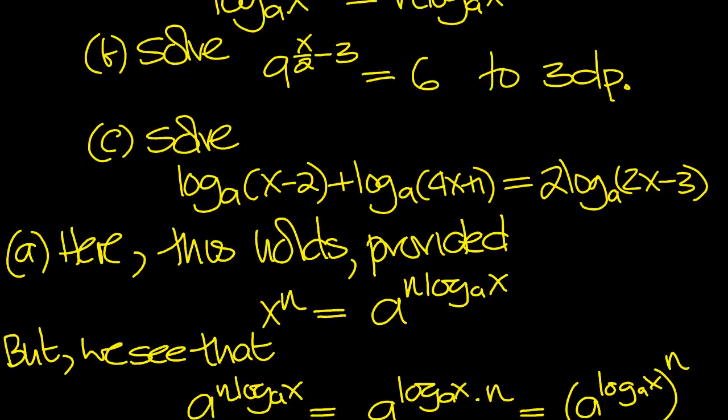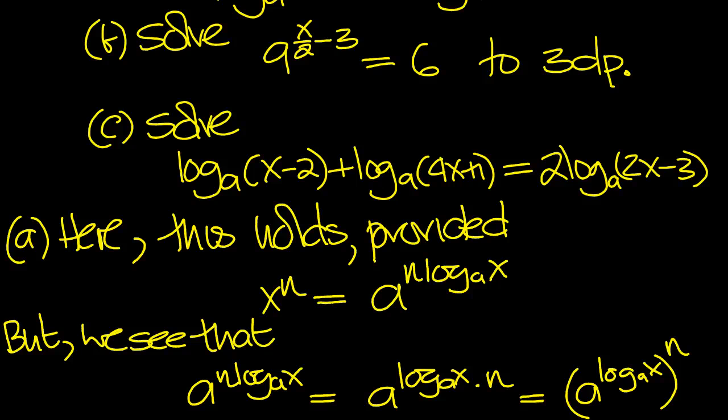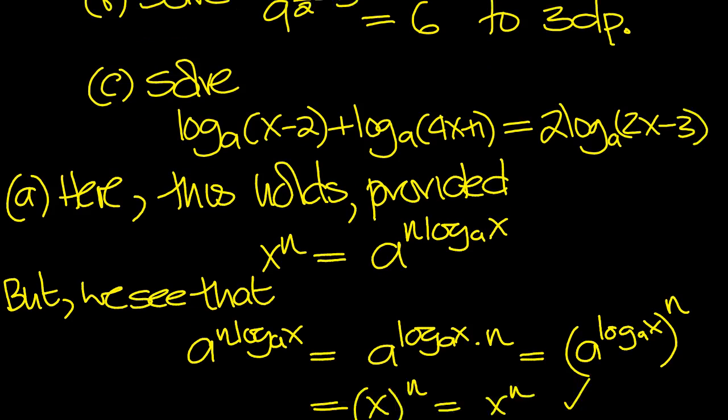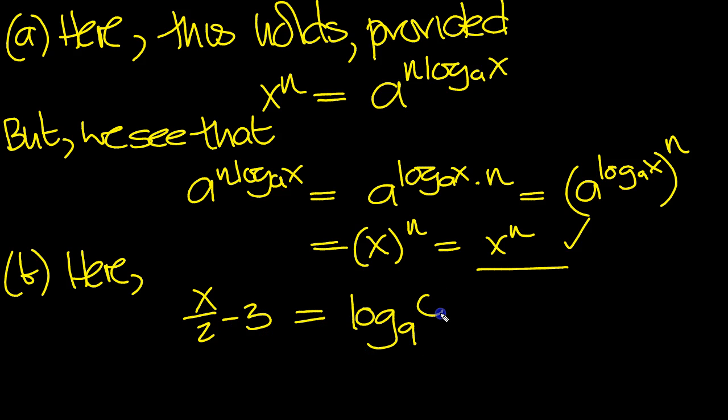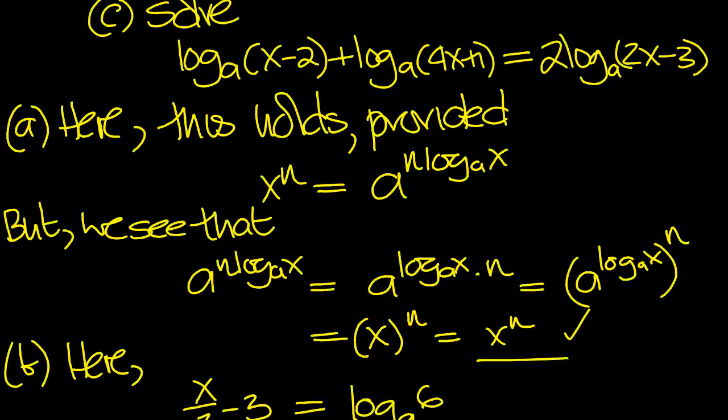Now part b, we need to solve this equation here. So we'll change this to the log form. Bring the 9 under as the base of the logarithm, so x over 2 minus 3 drops down to ground level. And 9 swings under, and it's log 9 of the number 6, which was on the right-hand side.